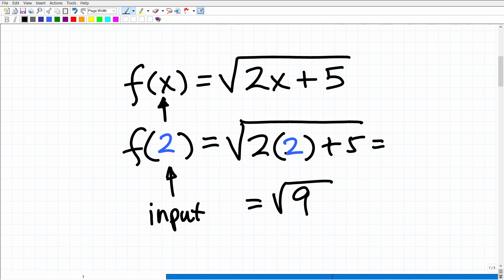Again, 2 times 2 is 4, 4 plus 5 is 9. So the square root of 9, of course, would be 3, okay? So this is the output value, and the input value is 2.